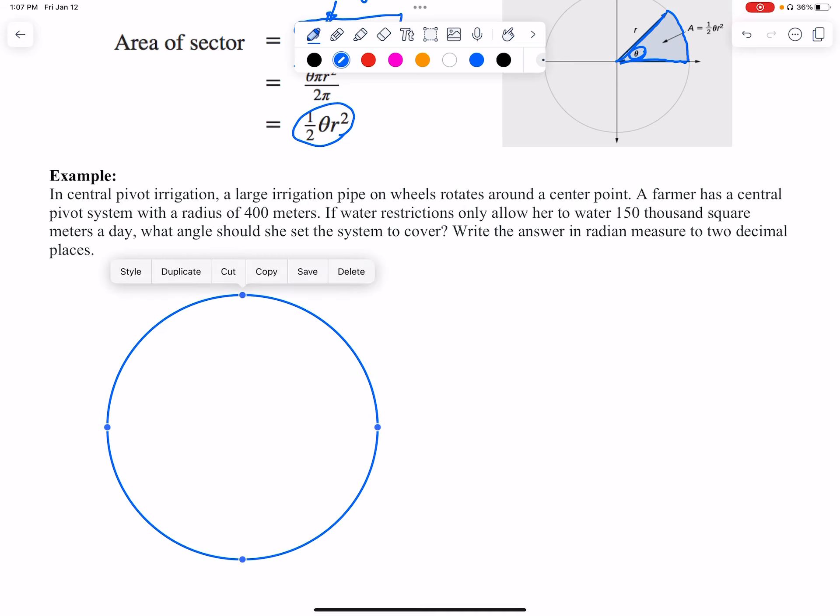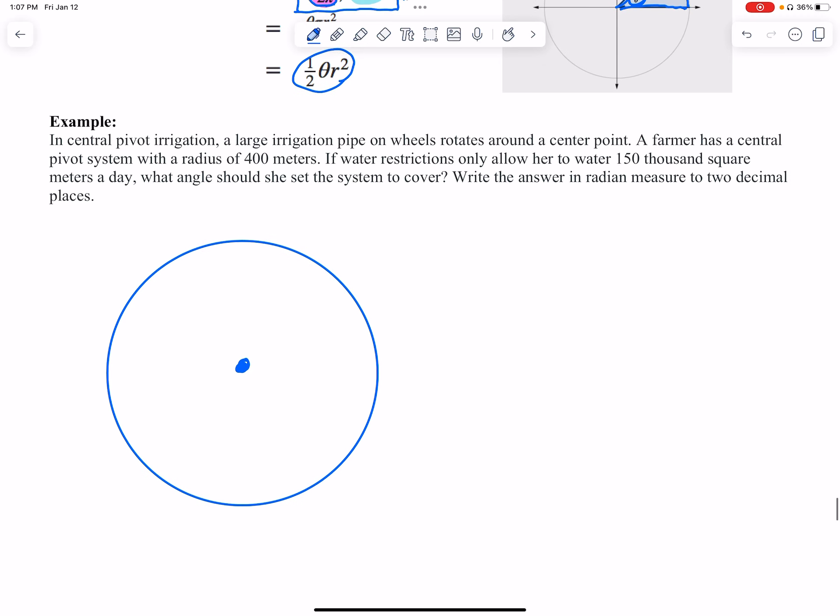There we go, and then we're gonna put a center here. I'm just kind of guessing here. Okay, so there's my center, about the center if not exact. And it says a radius of 400, so I'm gonna go ahead and write that: 400 meters.